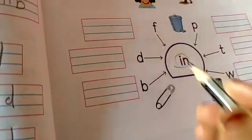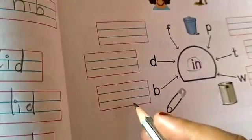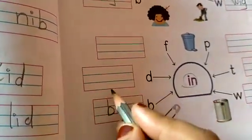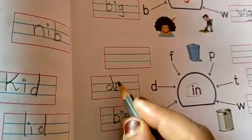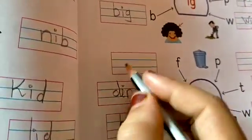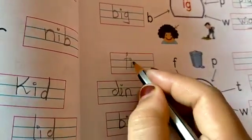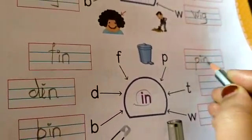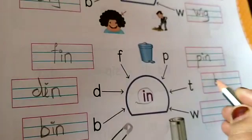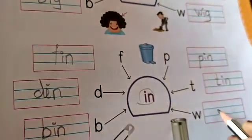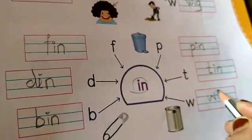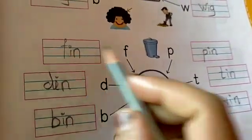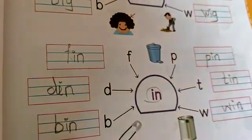Next is, with I n. First one is, B I n, bin. Next is, D I n, din. Next is, F I n, fin. Next one is, P I n, pin. Next is, T I n, tin. Next is, W I n, win. Bin, din, fin, pin, tin, win.